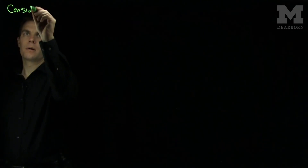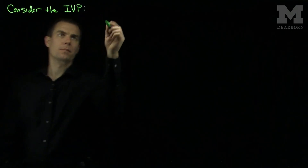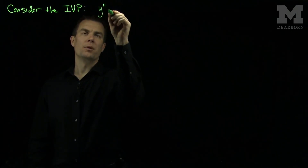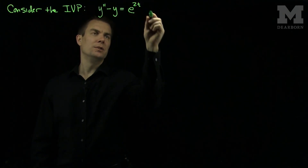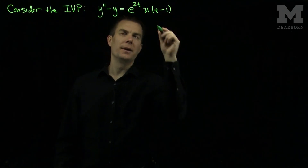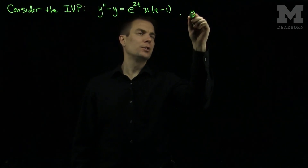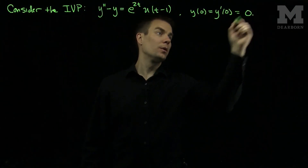Hello students. In this video we'll see an example of how to solve an initial value problem with a piecewise forcing function. Let's consider the initial value problem: y double prime minus y equals e to the 2t times u of t minus 1, with initial conditions y of zero equals y prime of zero equals zero.